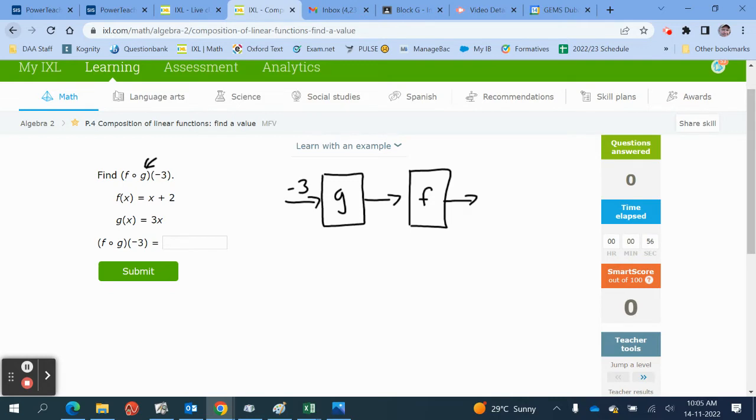Firstly, we need to calculate g of minus 3. Into the function g, which is 3x, we need to insert minus 3. That's going to give it a negative 9.